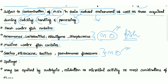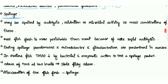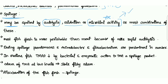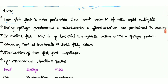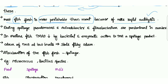Spoilage of fish may occur by autolysis (self-breakdown), through oxidation, or by microbial activity, or most commonly a combination of these. Most fish flesh is more perishable than meat, meaning it decays very quickly because more rapid autolysis occurs in fish.